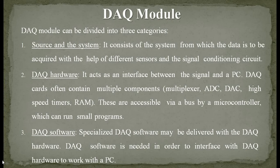The second category is DAQ hardware, which acts as an interface between the signal and the PC. DAQ cards often contain multiple components like multiplexers, ADCs, DACs, high-speed timers, and RAMs, accessible via bus by a microcontroller that can run small programs. Third is DAQ software — specialized DAQ software may be delivered with the DAQ hardware and is needed to interface the DAQ hardware and work with the PC. The software is often built into the hardware for seamless interfacing.